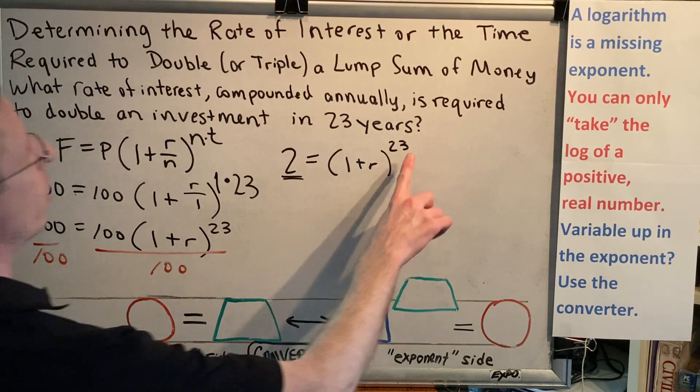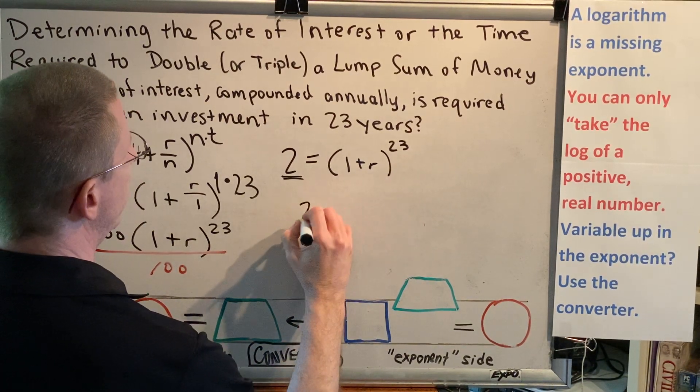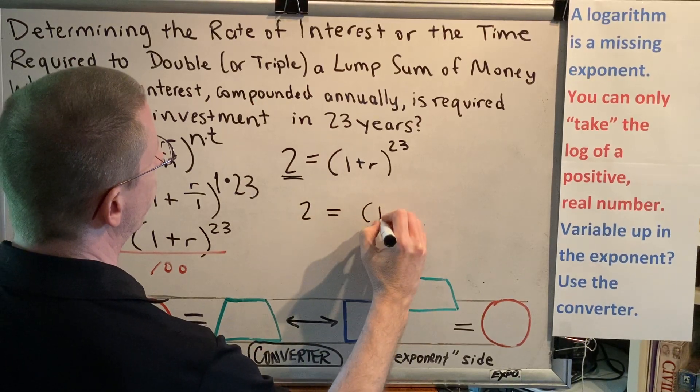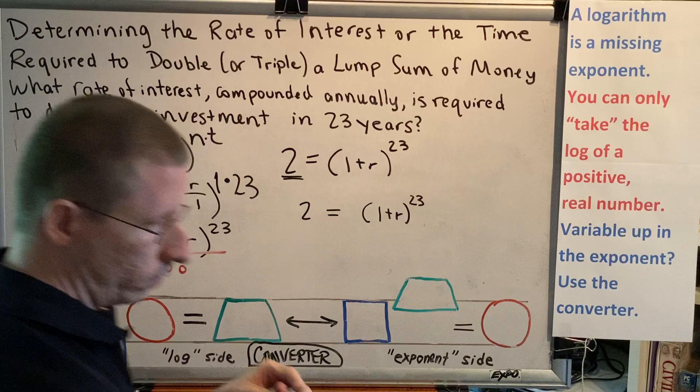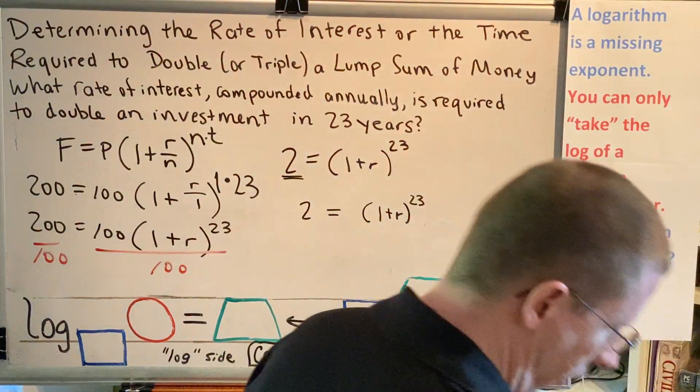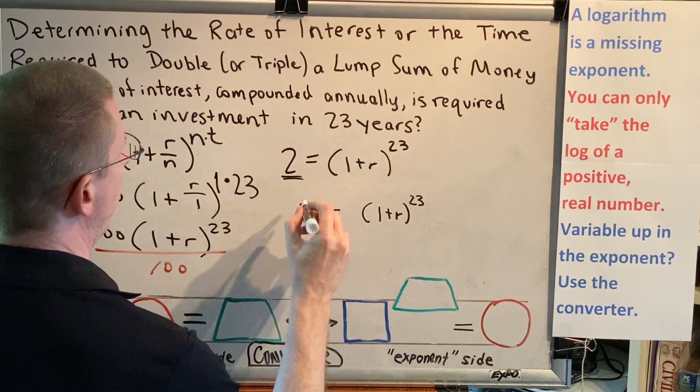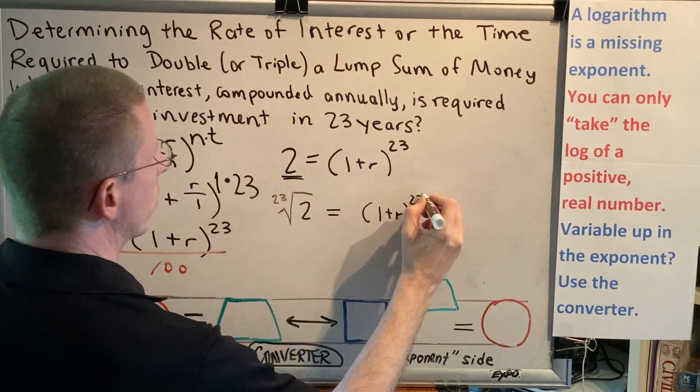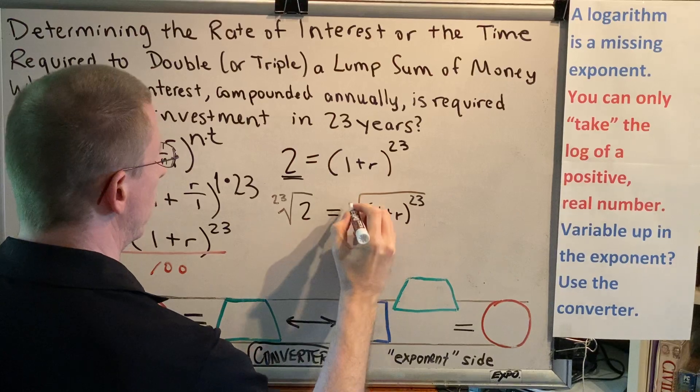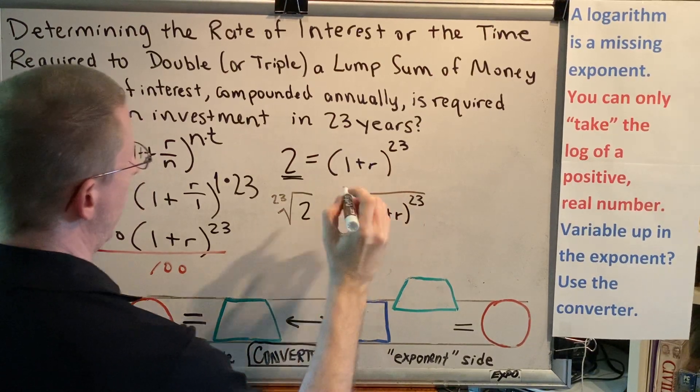Alright, we're now ready for our 23rd root. We're going to take the 23rd root of both sides. So this doesn't happen very often. Let's get a special color. Let's get brown. I don't use brown very often. So 23rd root of both sides. Special moment.